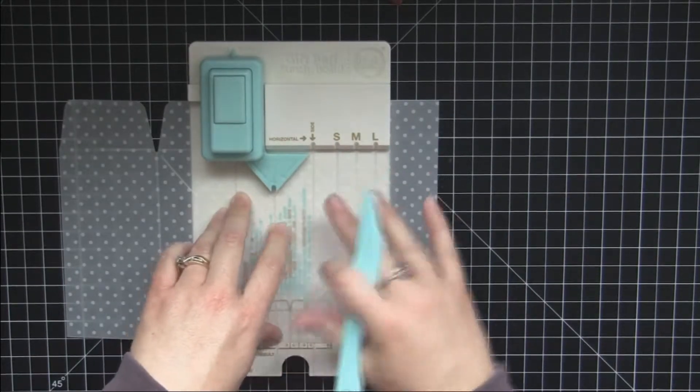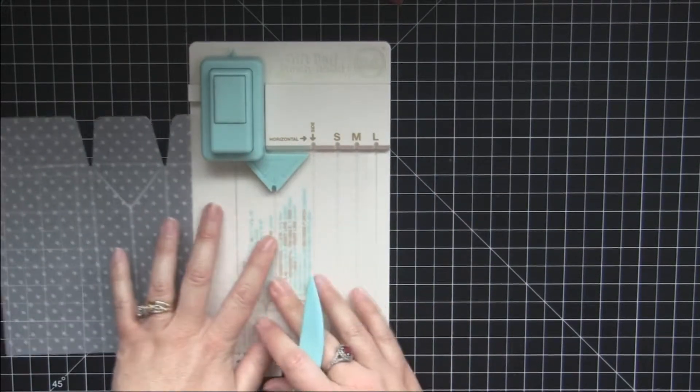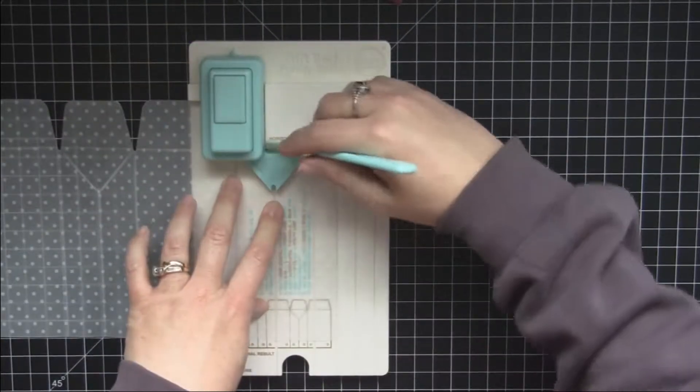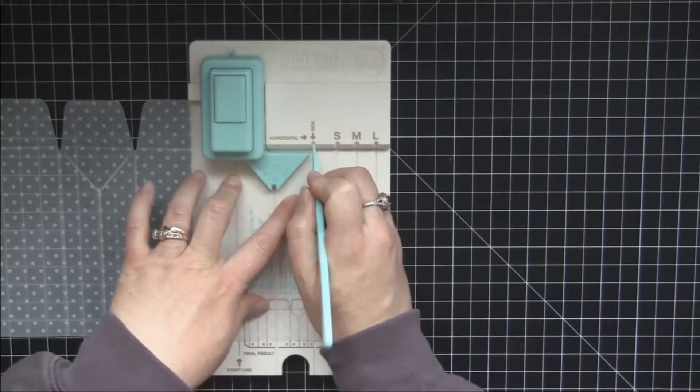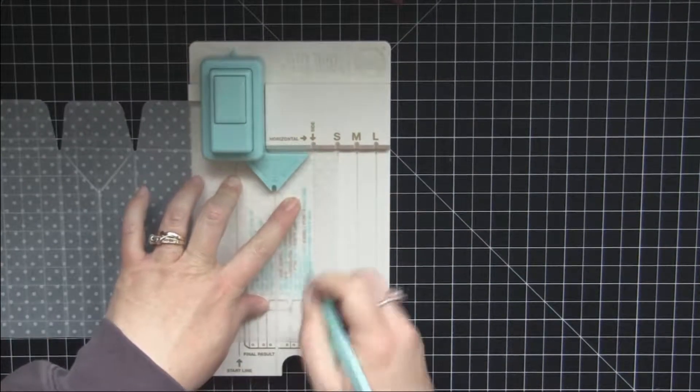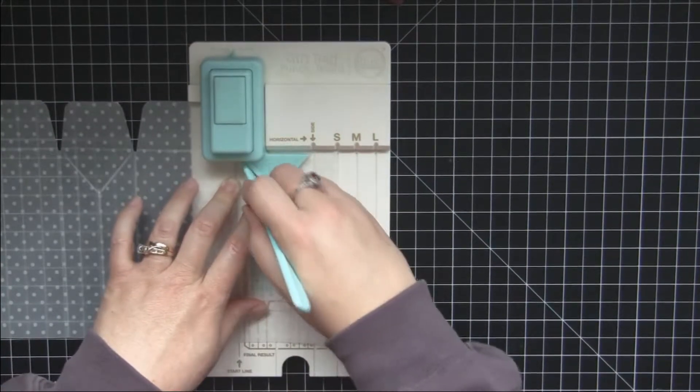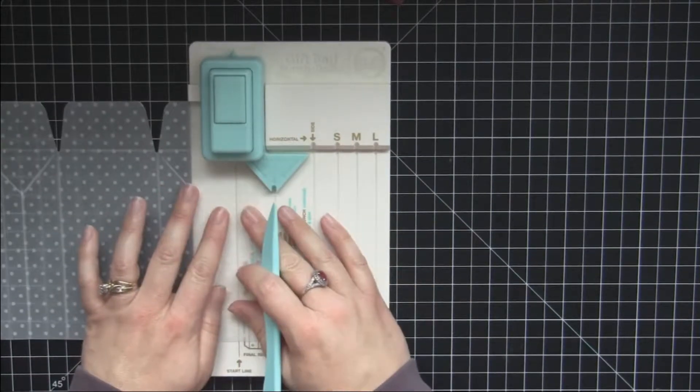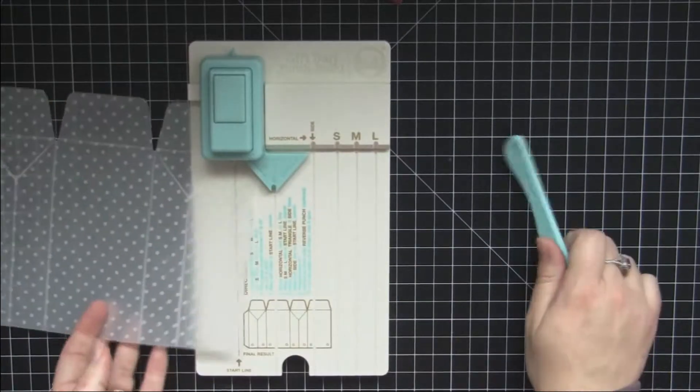This is the other part of our face or back to the bag. Move that score line to the start line, punch, and then we're going to score the side one more time. Move this over and punch one last time.